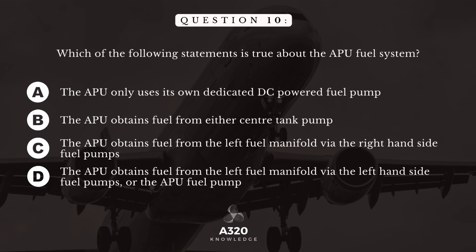And finally, question 10. Which of the following statements is true about the APU fuel system? A. The APU only uses its own dedicated DC-powered fuel pump. B. The APU obtains fuel from either center tank pump. C. The APU obtains fuel from the left fuel manifold via the right-hand side fuel pumps or the APU fuel pump.